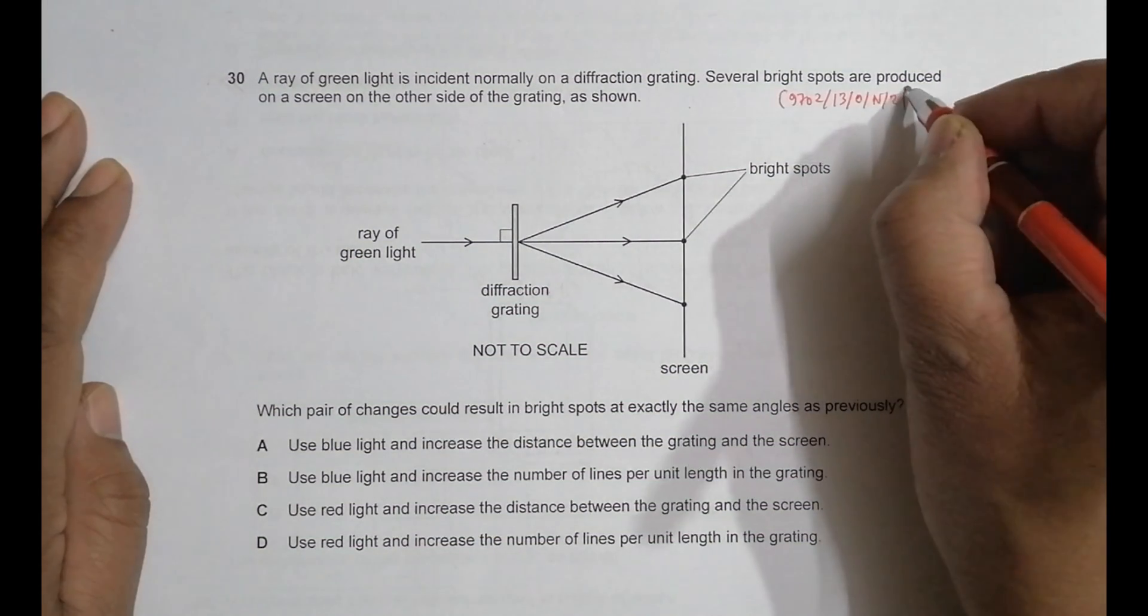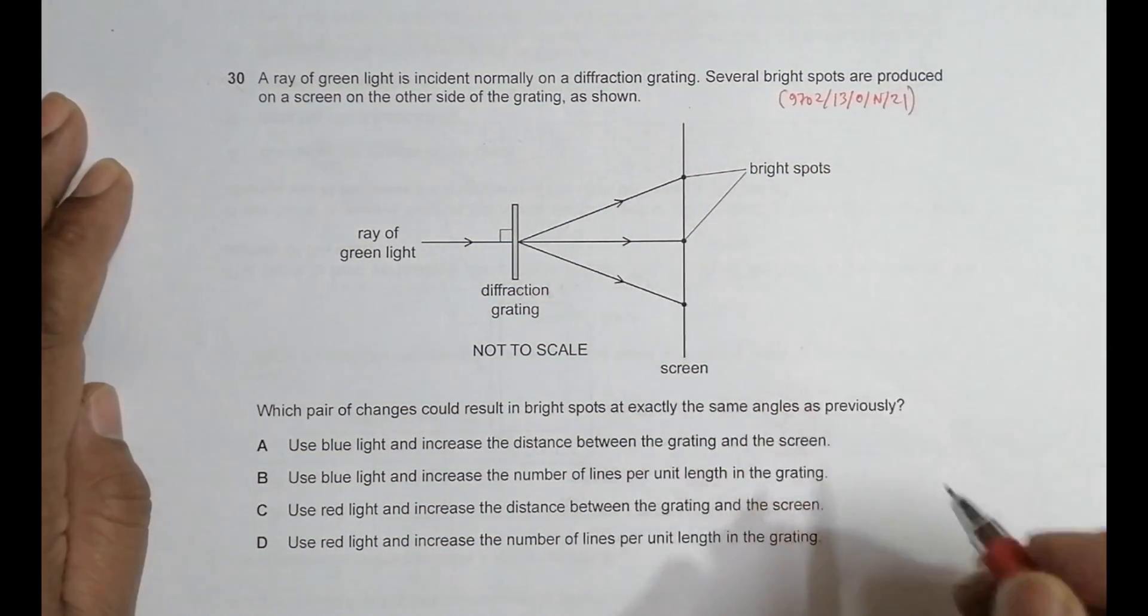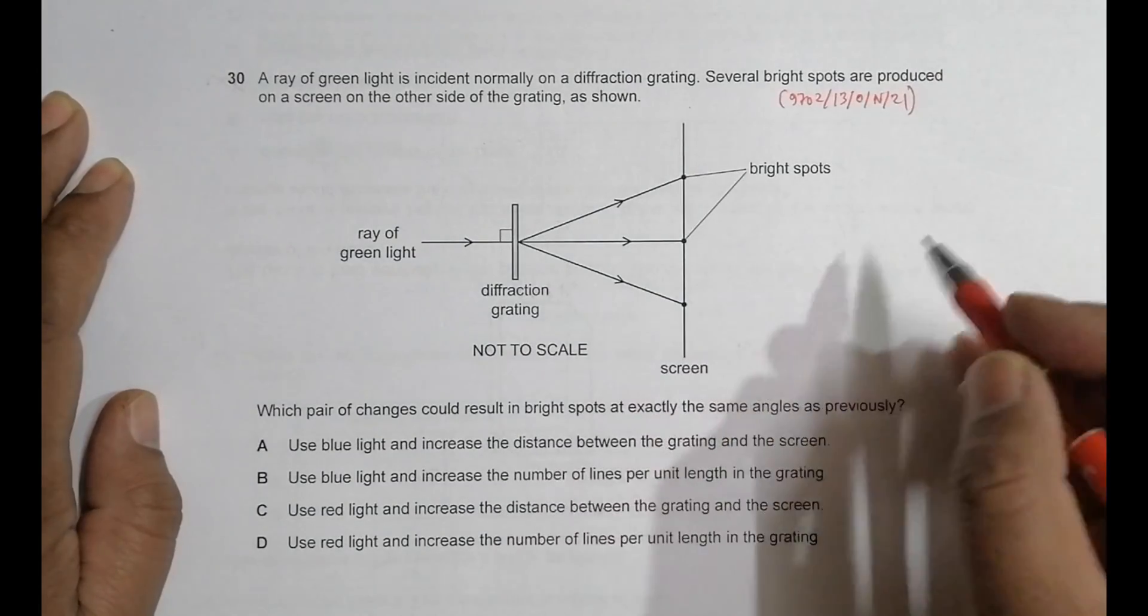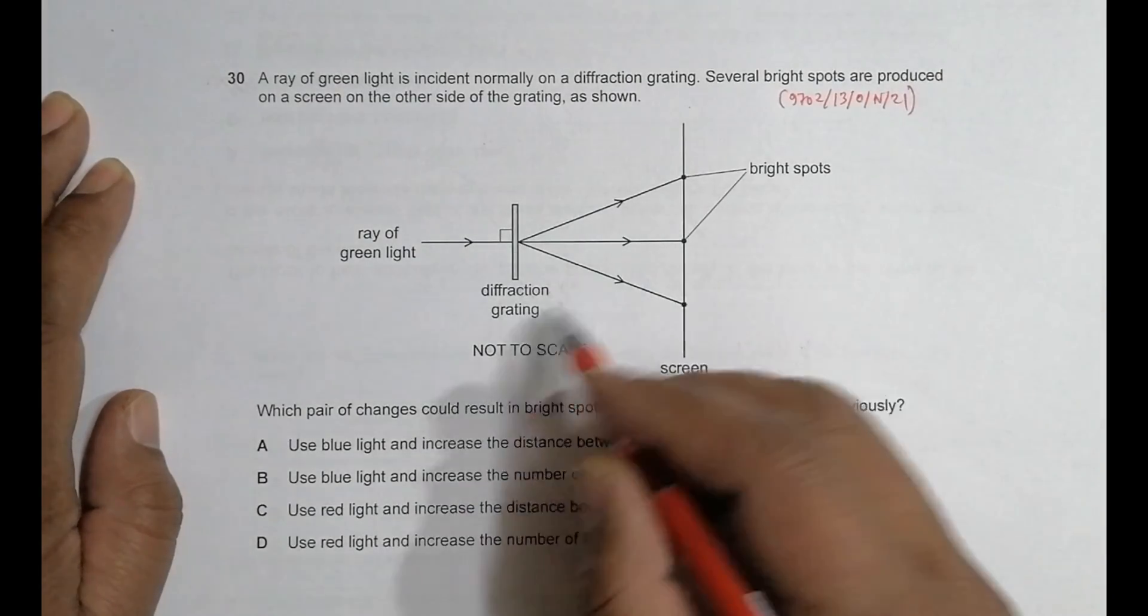So hello folks, this is the 2021 October November paper 1 3 and the question number is 30. It is concerned with the chapter on waves and its diffraction of course.